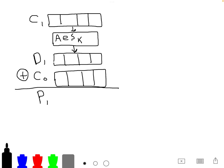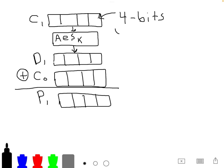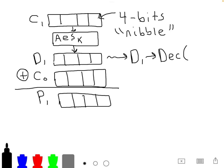Each cell in C1 is four bits — we're simplifying the arithmetic — also known as a nibble. D1 can be thought of as just the decryption of C1: a DEC function of C1. That operation is encapsulated in D1, which allows us to not have to think about the C1 decryption separately.